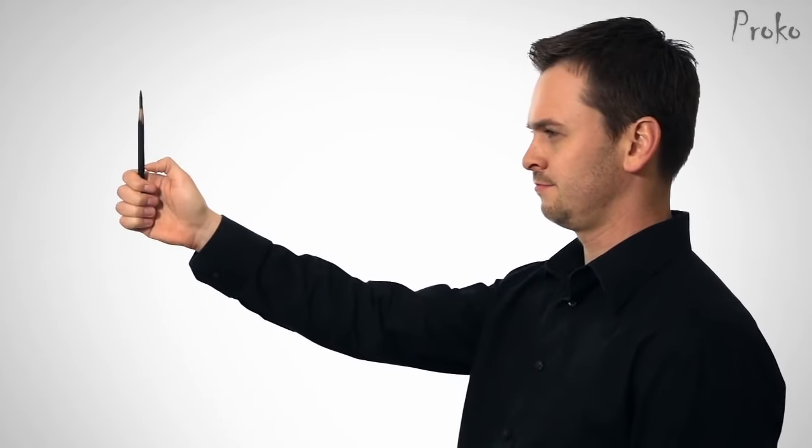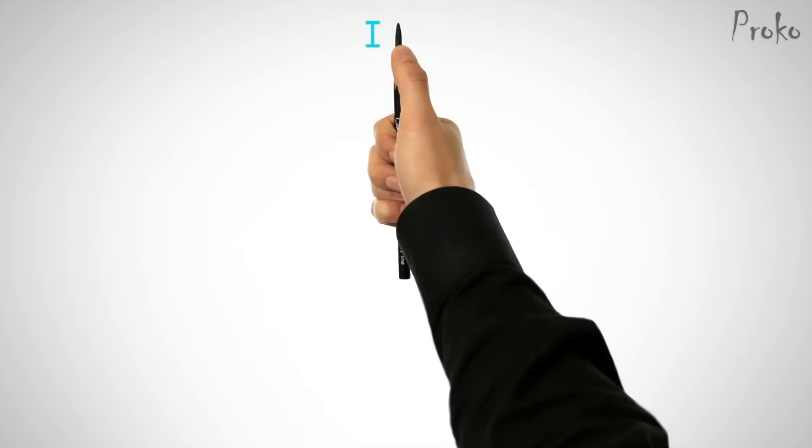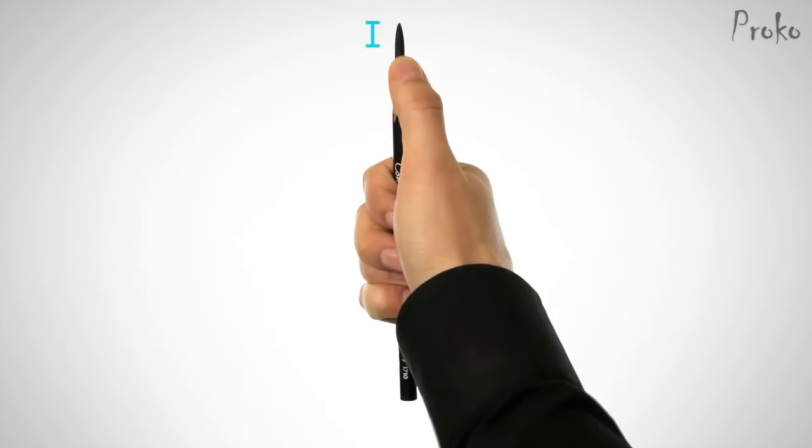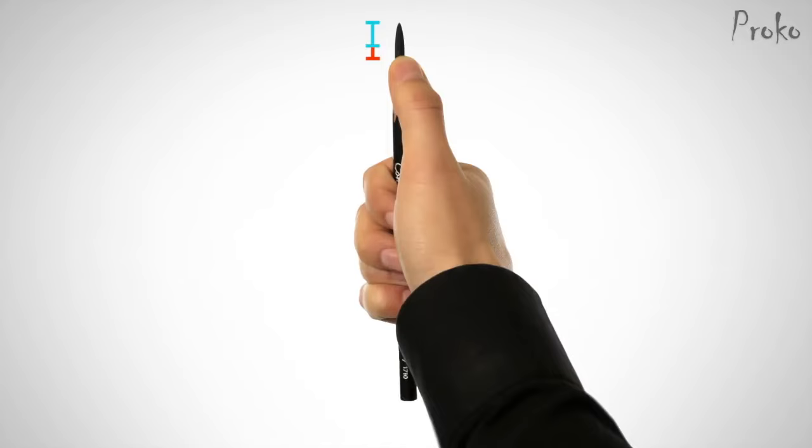First, hold your arms straight out without bending the elbow. Bending the elbow will bring the measurement closer to your eye and increase the size. The measurement will be consistent if the elbow is locked.